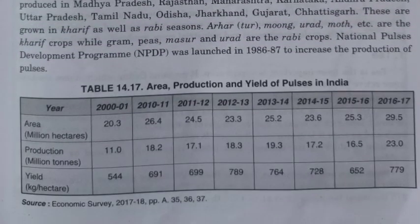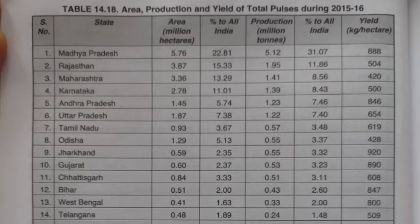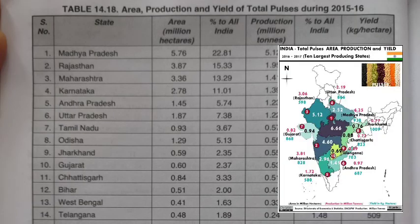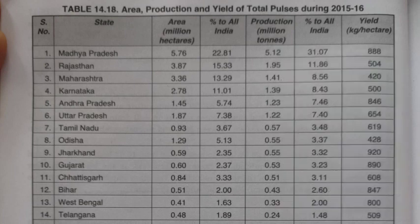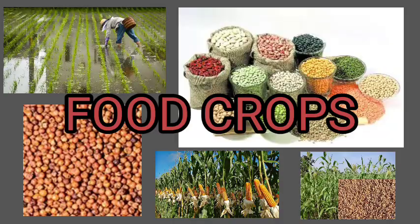Varieties of pulses grown as kharif crops include arhar, moong, urad, and moth, while gram, peas, masoor, and urad are grown as rabi crops. A table has been provided showing area, production, and yield of pulses in India over the years, as well as state-wise data based on the latest 2015-16 report. This concludes the discussion of different types of food crops in India.